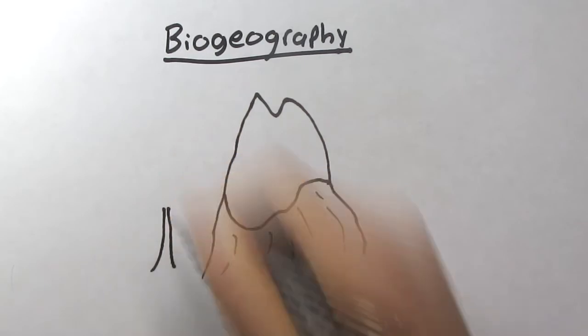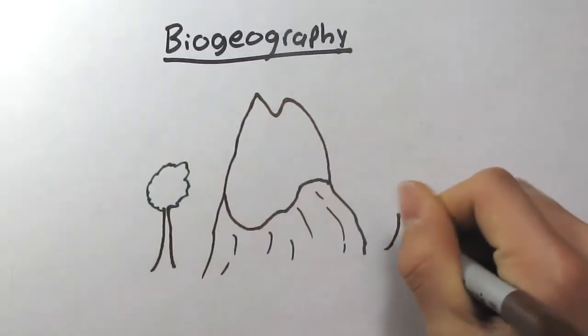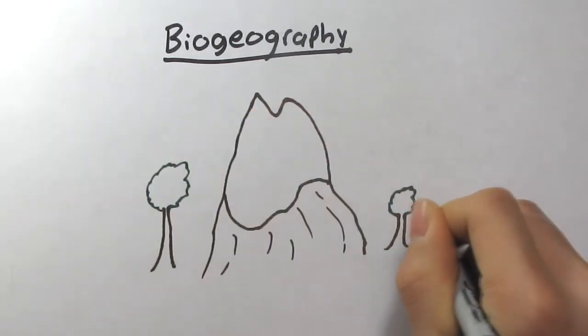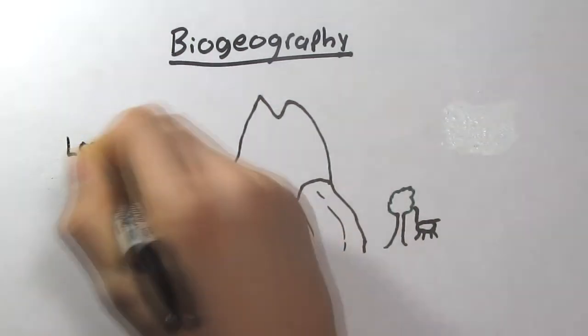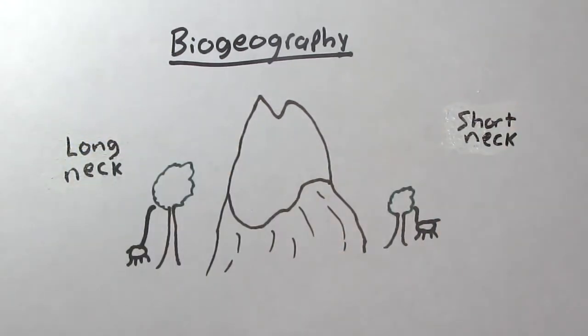Animals that are the most similar and the most closely related tend to be found in the same regions because evolutionary change is partly driven by geographical change. When organisms are isolated by physical barriers like oceans or mountains, they take their own evolutionary courses.